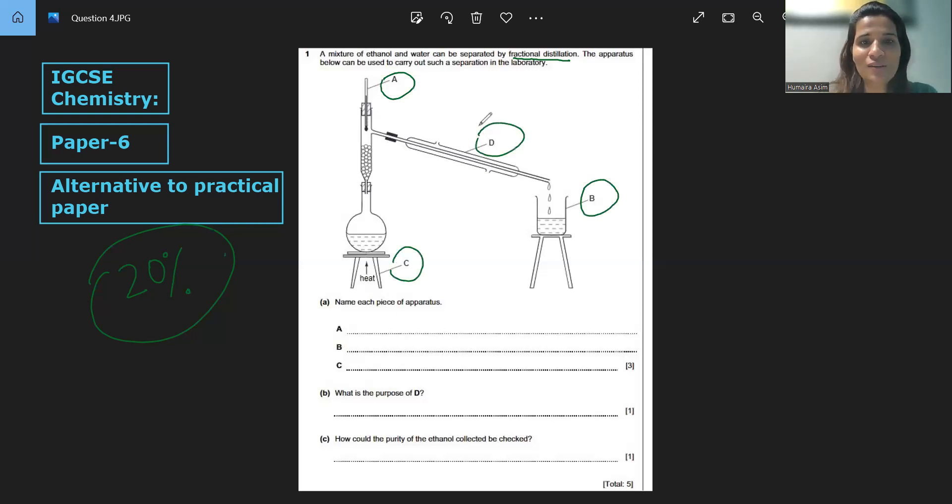Now, what are they asking us? Name each piece of apparatus A, B, C. So A here, as we can see, what is that? That is thermometer. Make sure that spellings are correct.